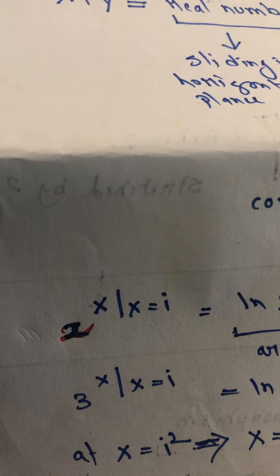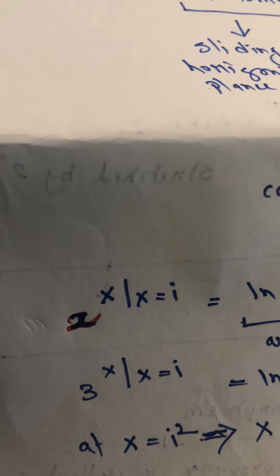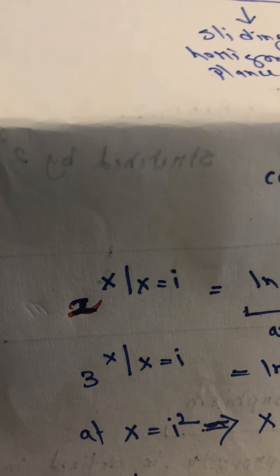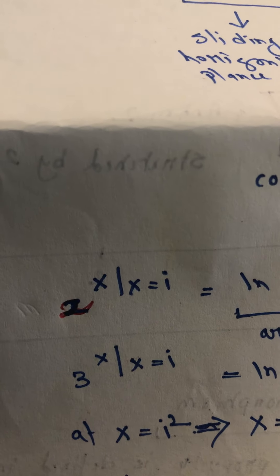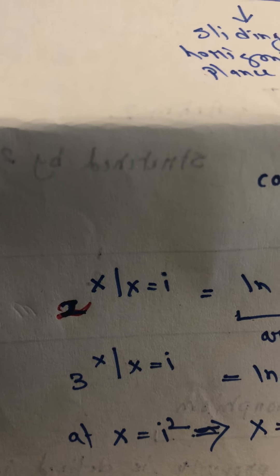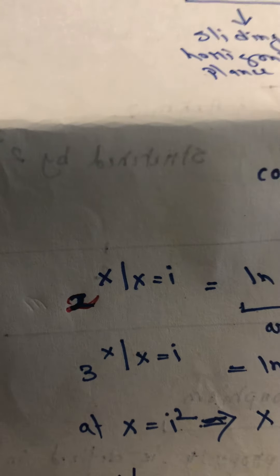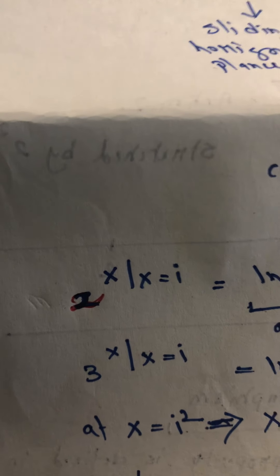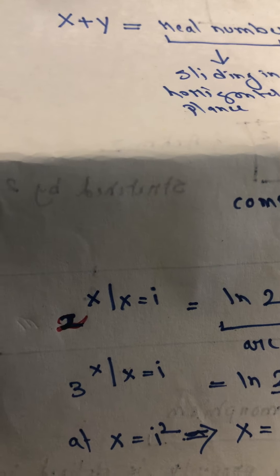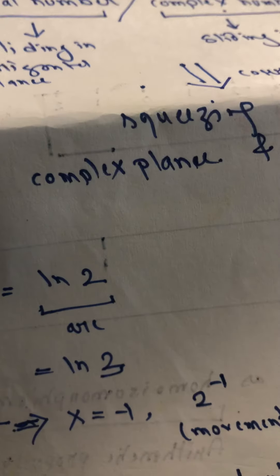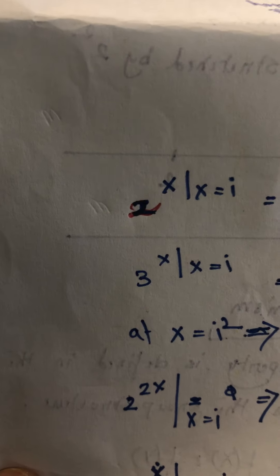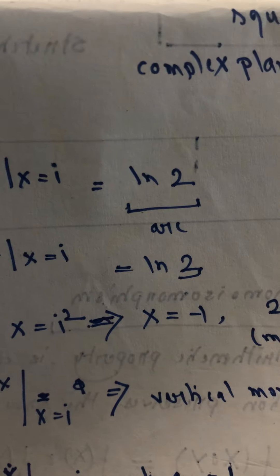Let us assume 2 to the power x, and in this case I am assuming that x is equal to pi. That means I am travelling along the complex number line in the vertical — there is a vertical slide. And this vertical slide results in some sort of an arc, and that arc is equivalent to log of 2 in this case. Similarly, if it is 3 to the power x, that corresponds to some arc of log 3.